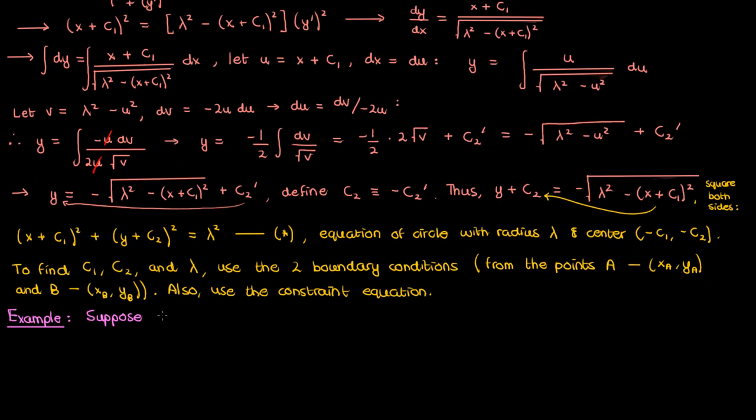And let me actually give you an example of this with some actual numbers. Suppose a and b are two points on the x-axis with xa at square root of negative 3 and xb at square root of 3. Suppose also that the length of the arc connecting a and b is 4 pi over 3.